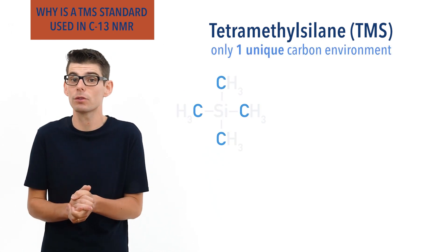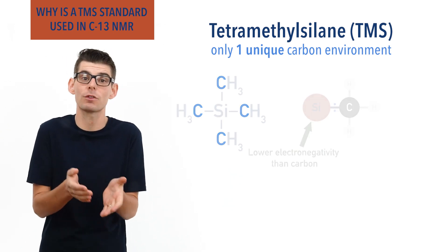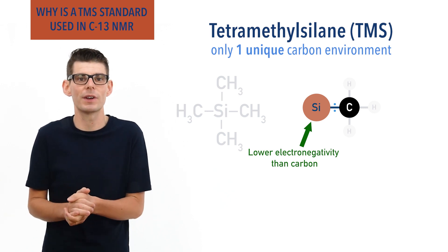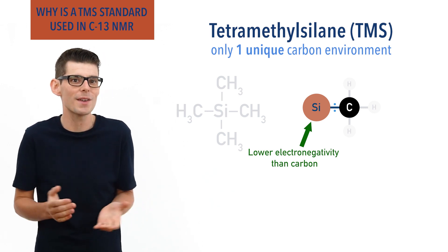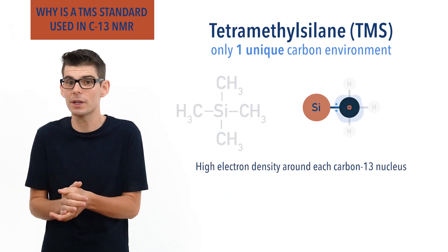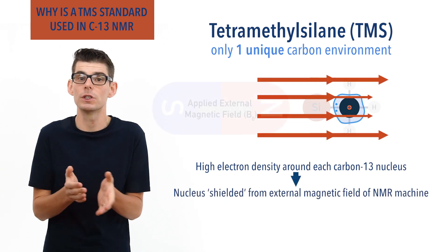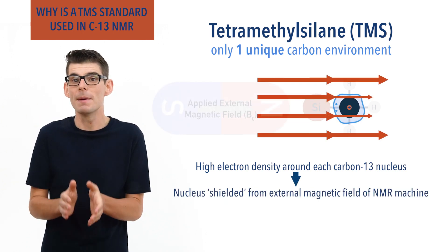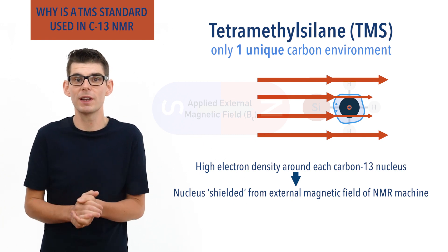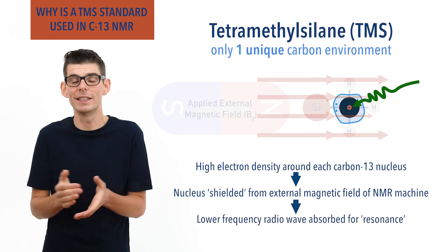This is because silicon has a lower electronegativity than carbon, meaning each carbon atom doesn't have electron density pulled away from it. This gives a high electron density around the carbon's nucleus and shields it from the external magnetic field used in an NMR machine, making it slightly easier for the spin of the nucleus to be flipped, meaning low energy radio waves of a lower frequency are needed.